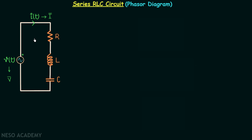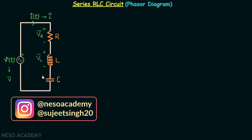The voltage phasor across the resistor is represented by VR phasor, the voltage phasor across the inductor is represented by VL phasor, and the voltage phasor across the capacitor is represented by VC phasor.